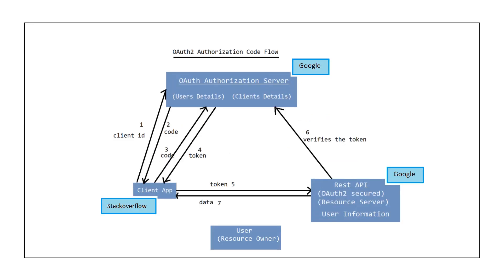We can see a real-time scenario here. Imagine Stack Overflow is a client application. The user wants to access Stack Overflow. Instead of creating a new user account in Stack Overflow, the user authorizes Stack Overflow to get some user details from the resource server, so that Stack Overflow makes use of those user details to authenticate the user. Stack Overflow contacts the authorization server, gets a token back, and uses that token to get the user details and store them to authenticate the user in the future.